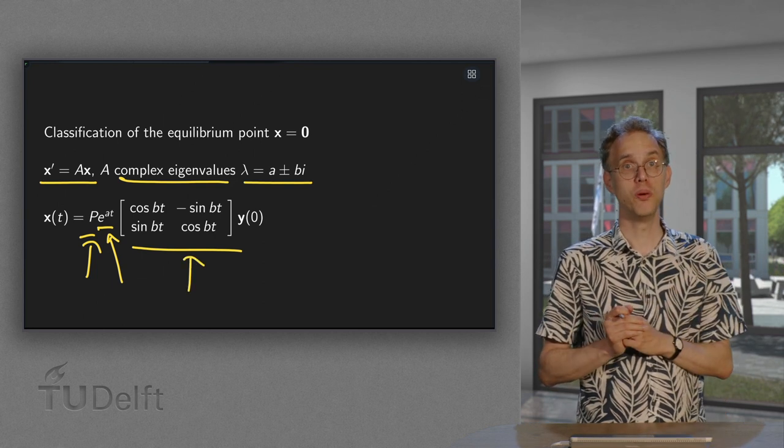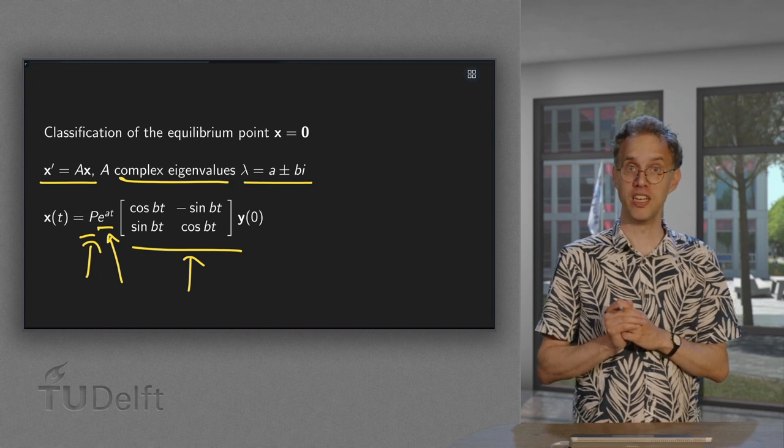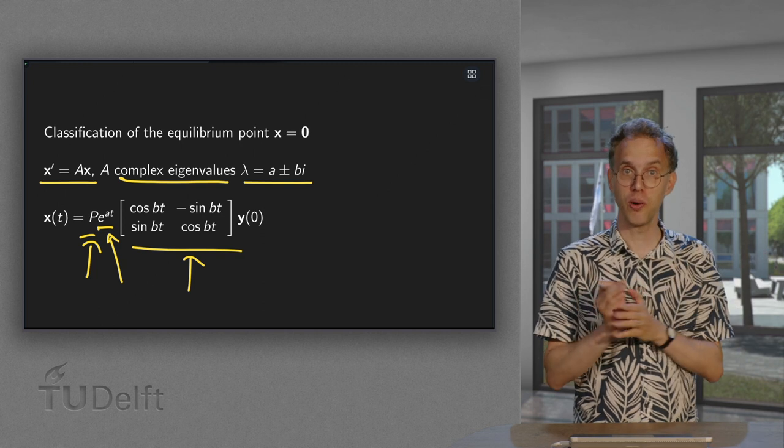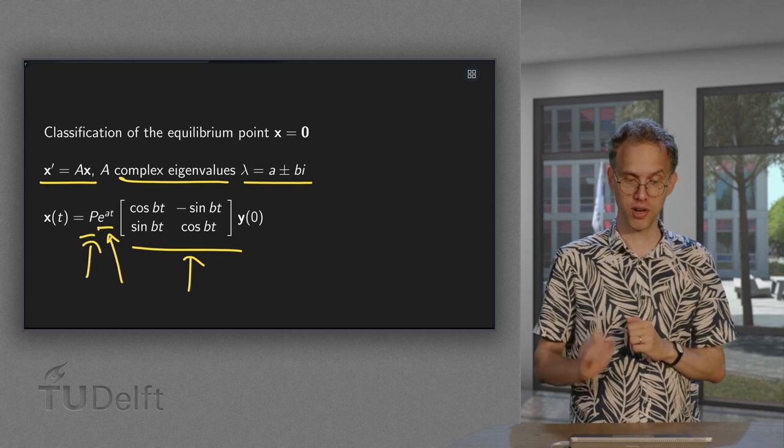We assume that we have complex eigenvalues, so b is non-zero, so we definitely have some rotation going on. So we are going to rotate.